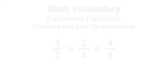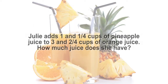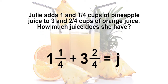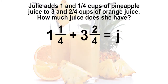Let's look at the following problem. Julie adds one and one-fourth cups of pineapple juice to three and two-fourths cups of orange juice. How much juice does she have? The equation is one and one-fourth plus three and two-fourths equals j.